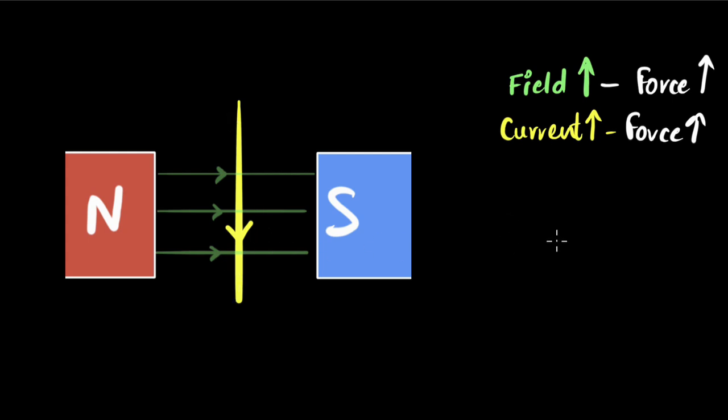Now what if we reverse the direction of the magnetic field? What'll happen? Well, it turns out the direction of the force will also reverse. We will not worry about exactly how to find the direction of the force, we'll do that in a separate video. But over here, all that matters is that whatever direction the force was, it will reverse.